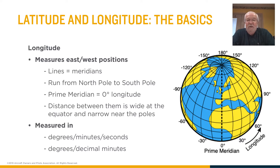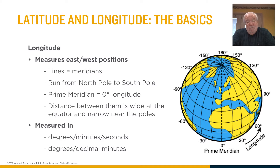Now we have longitude. Longitude lines are what we call meridians. They run from the north pole to the south pole around the planet. The prime meridian is zero, and that goes through Greenwich, England. They are not parallel because they converge at the north pole and at the south pole — they're furthest apart at the equator.